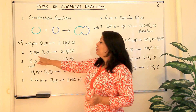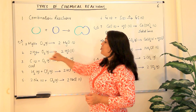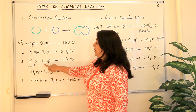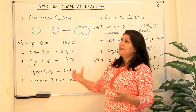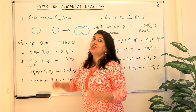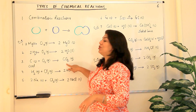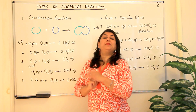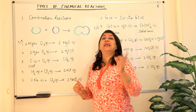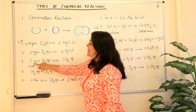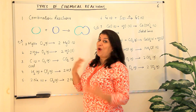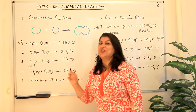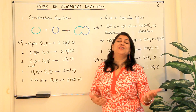Hydrogen burns in oxygen to produce water — also a combination reaction, since two different elements combine to form a compound. Then you have carbon in the form of coal; when coal burns in the oxygen of air, oxidation takes place and it results in the formation of carbon dioxide. If oxygen is adding to carbon, carbon is getting oxidized, but oxygen itself is getting reduced — a little preview for when we cover redox reactions.